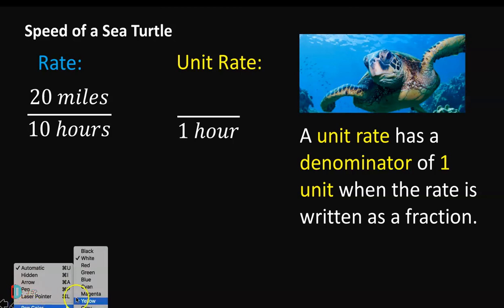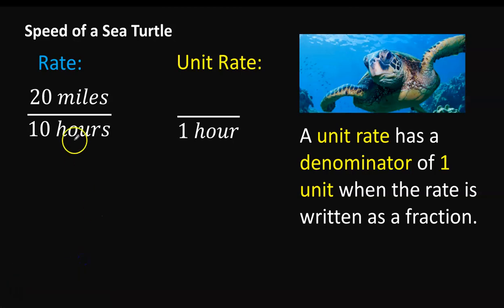So what we're going to do is think about if we decreased or increased when we went from 10 hours to 1 hour. We decreased so we're scaling down. So we are dividing. 10 hours divided by 10 gives you that one hour. Whatever you did to the denominator, you have to do the same thing to the numerator so that you create an equivalent fraction. 20 divided by 10 gives you 2. So for our unit rate we get 2 miles per hour.